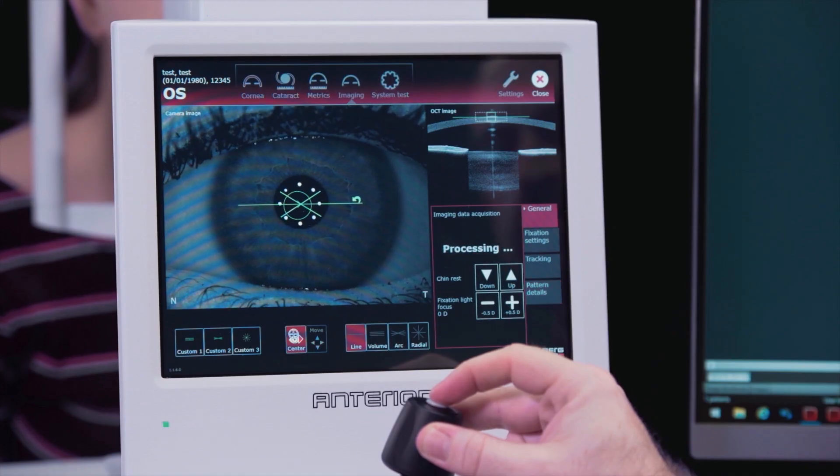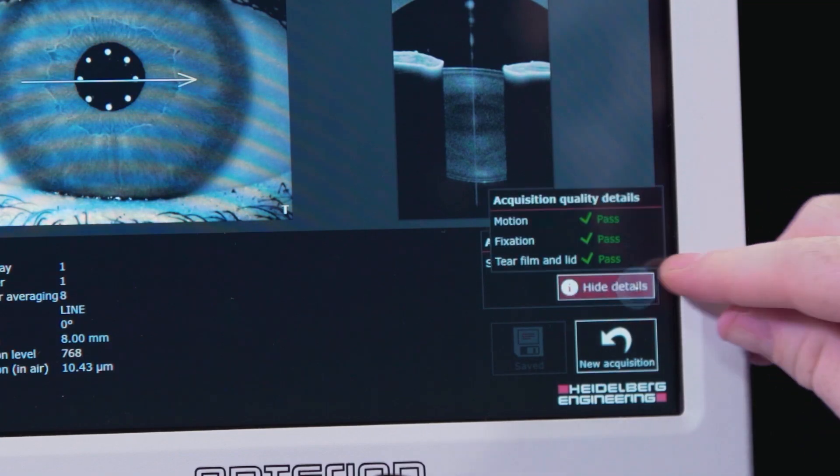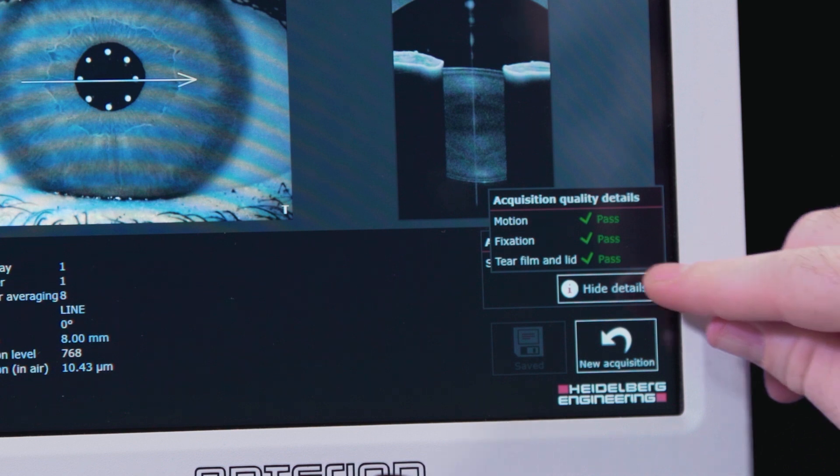The acquisition quality tab will display a pass, borderline, or fail on the image. A pass or borderline image is automatically saved. A failed result is not automatically saved.